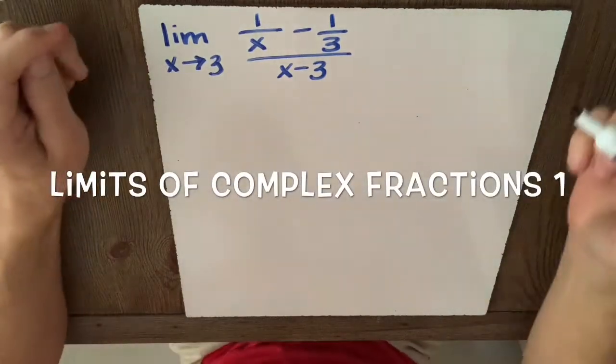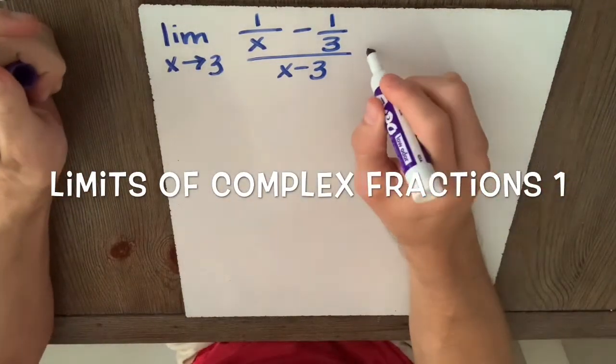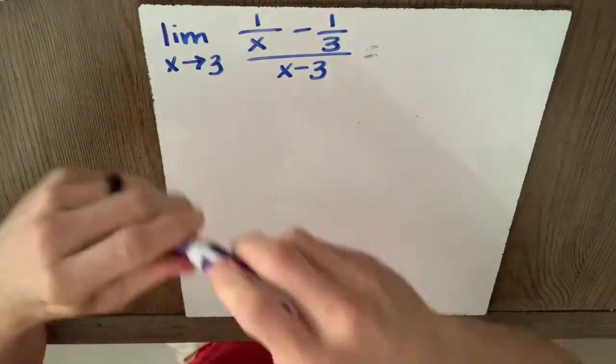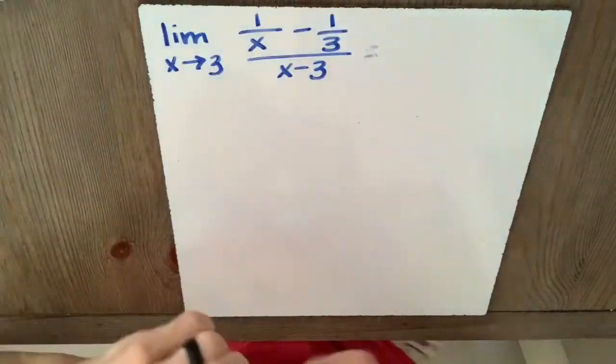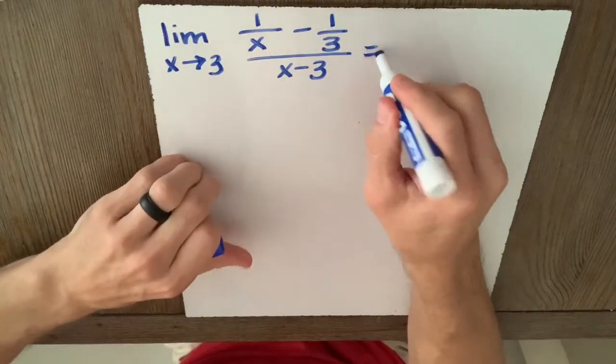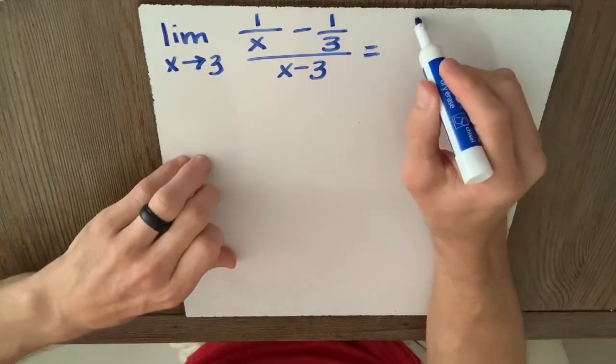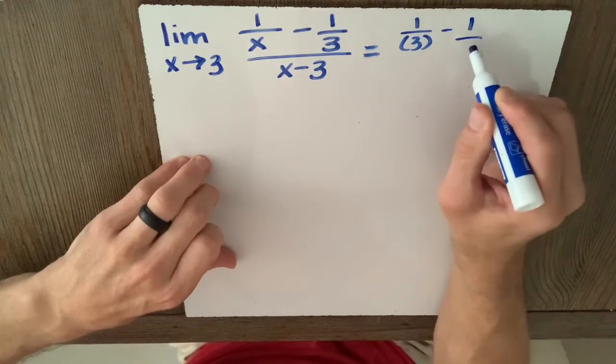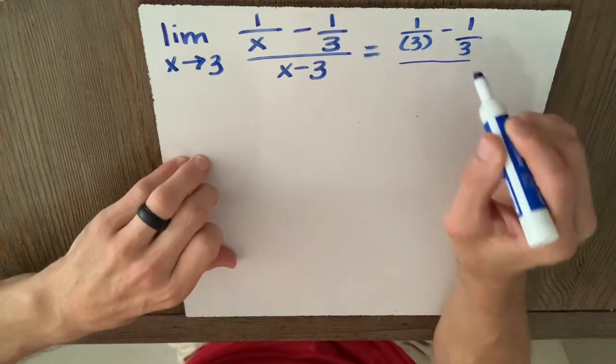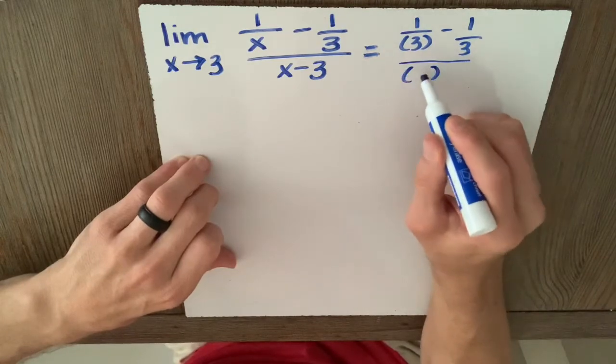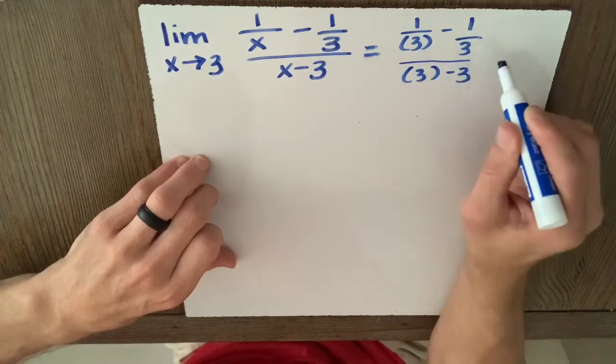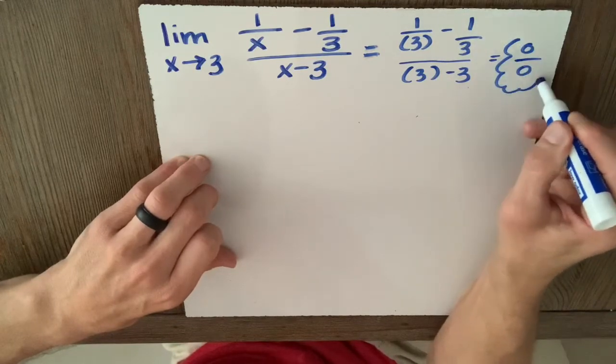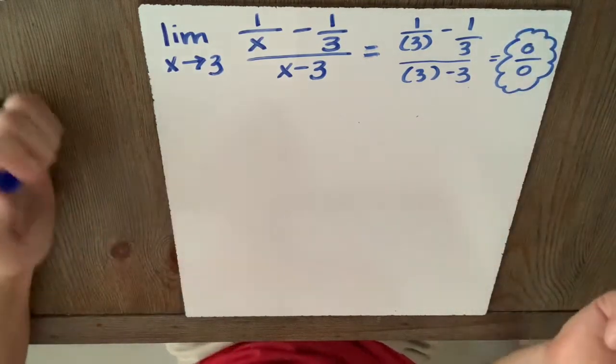Here is a limit problem. Of course, our first and favorite option, which I'll call plan A, will be to use direct substitution. So if I have the limit as x approaches 3 of 1 over x minus 1 over 3 over x minus 3, you can see this is going to give us 0 over 0, which is an indeterminate form.